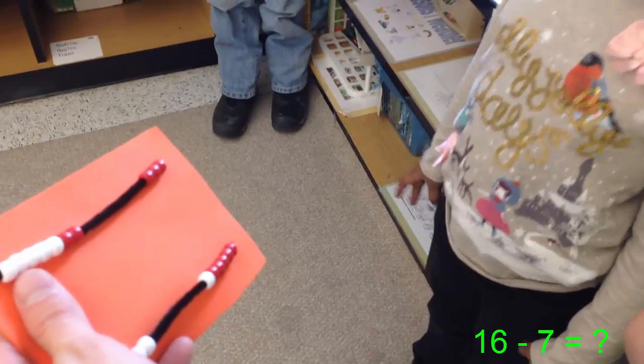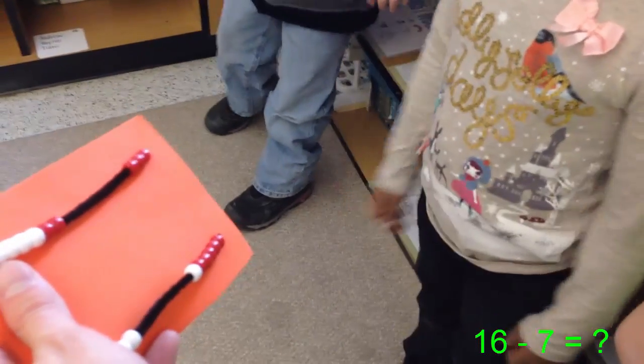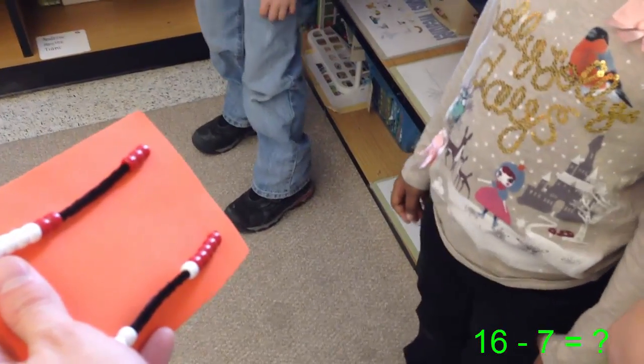How many are left, Sienna? Nine. How do you see them? How many are on top? Three. How many are on the bottom? Six. Three and six make? Nine. Thank you. Two and five.